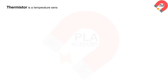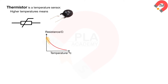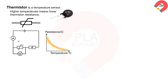A thermistor is a temperature sensor. This is the symbol of a thermistor. Higher temperatures mean lower thermistor resistance. For the circuit diagram, when temperature increases, the thermistor's resistance decreases, causing the current from the battery to increase and the voltage across the thermistor to decrease.